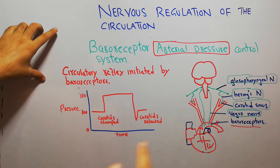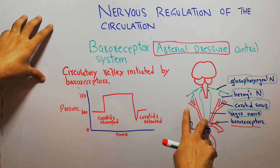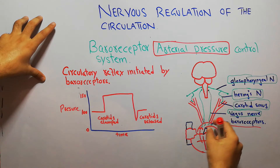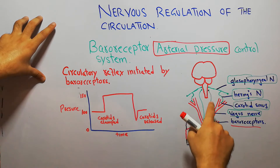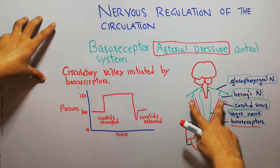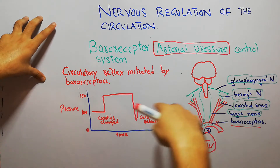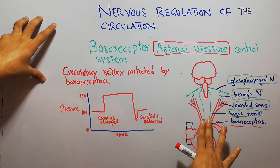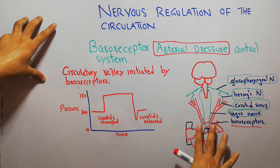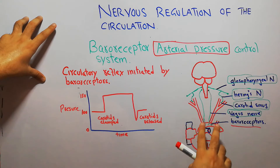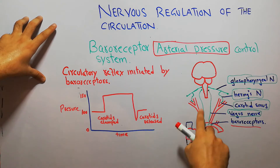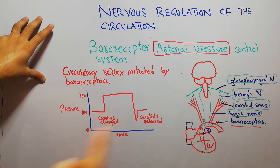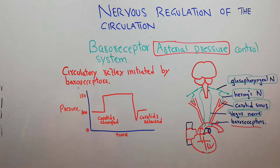Once there is an increase in arterial pressure, the baroreceptors in the aorta and the carotid have been activated and they send a signal with the help of the vagus nerve and the glossopharyngeal nerve to the tractus solitarius of the brain. Then what happens?